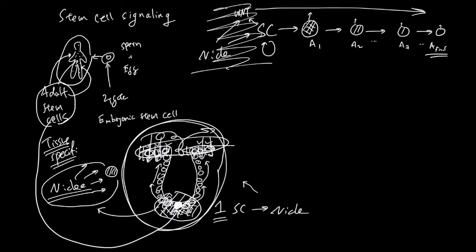This is key: the stem cell local environment—all these signals—the magic takes place locally. That's why the niche is very important for stem cells.